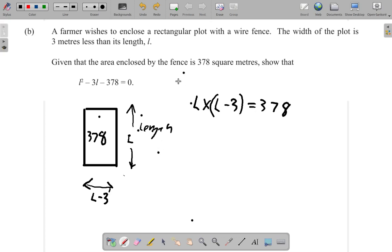Because L is the length, and I'm really saying L the length times the width, which is L minus 3. So you know that it's a rectangle. So this is the way you calculate your area.